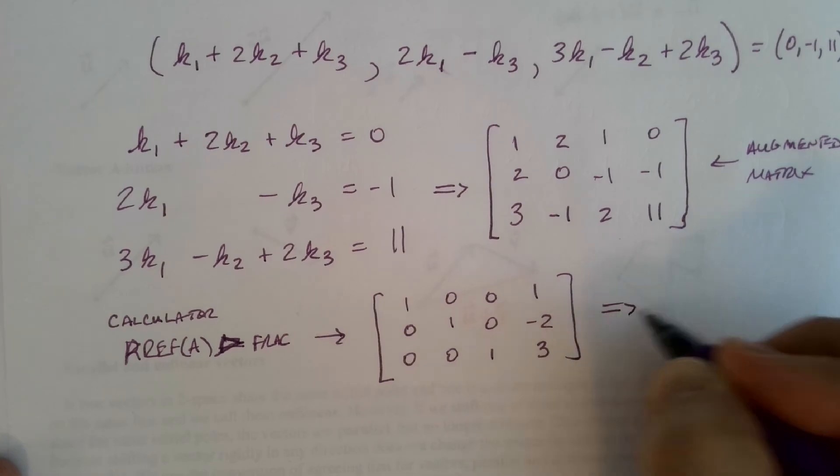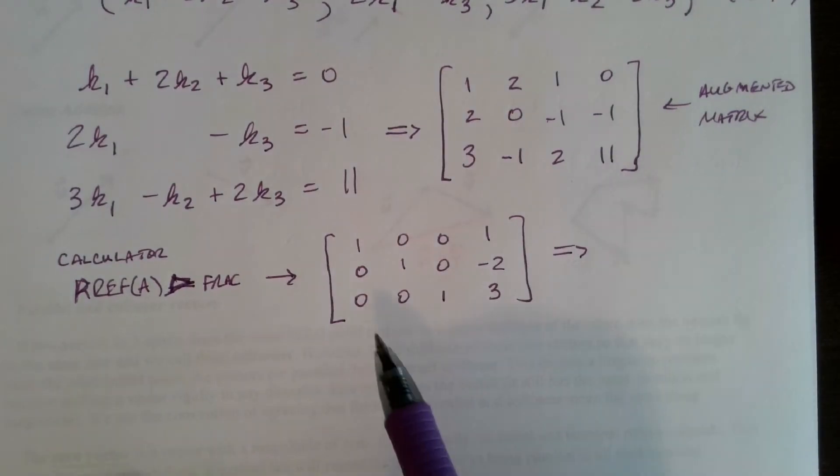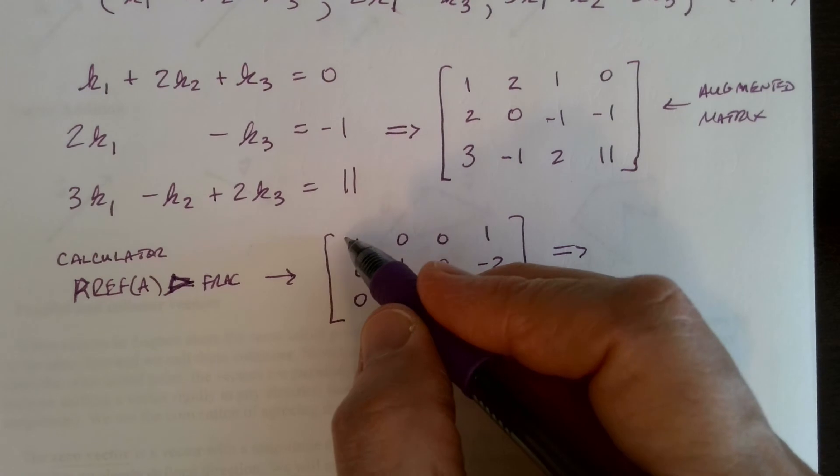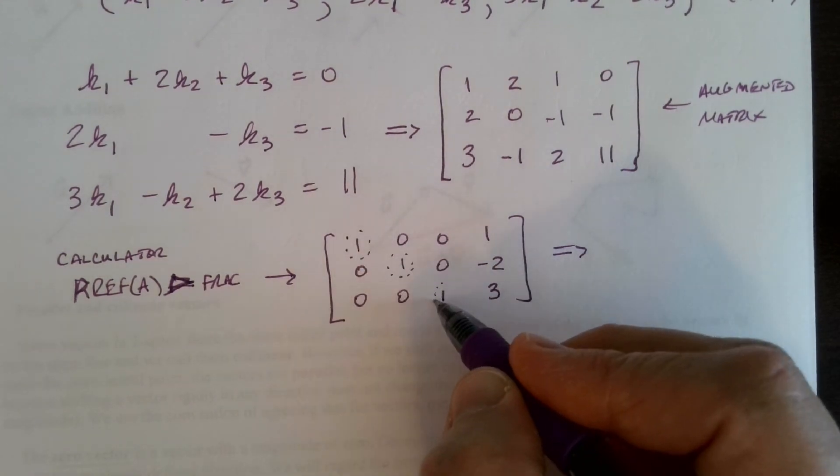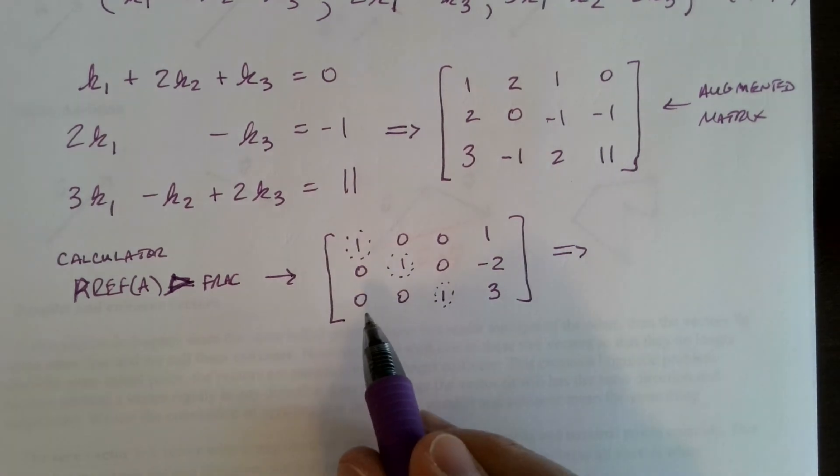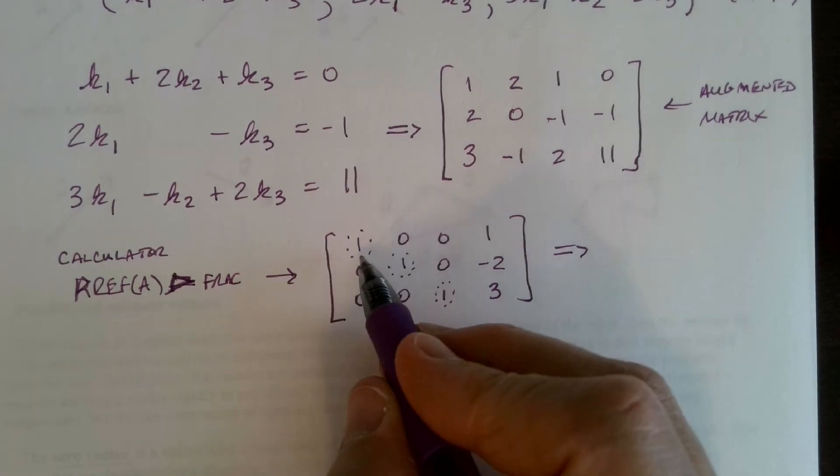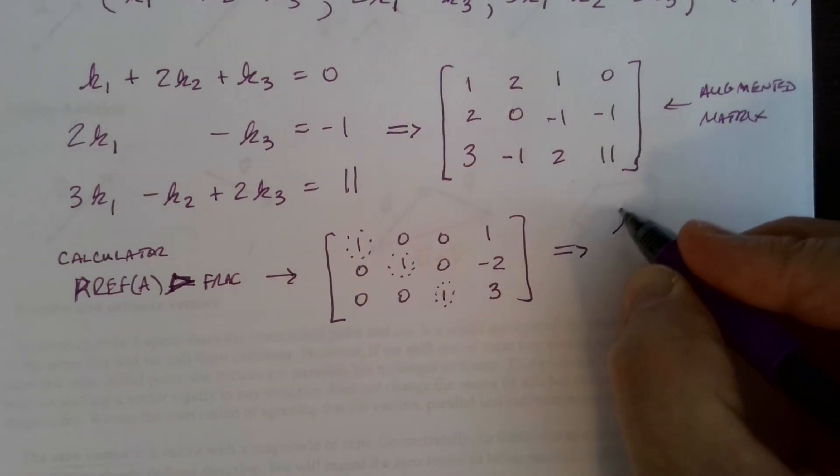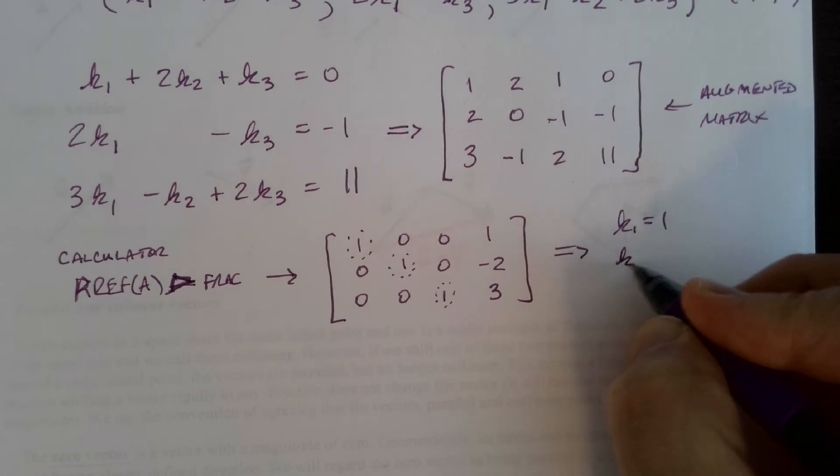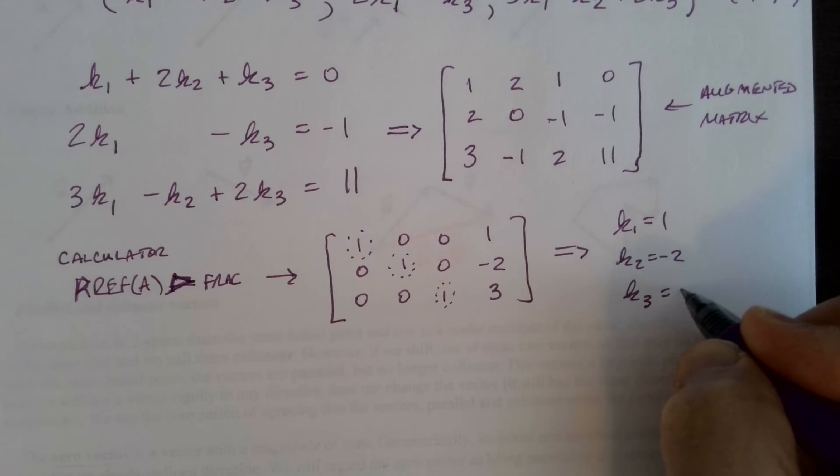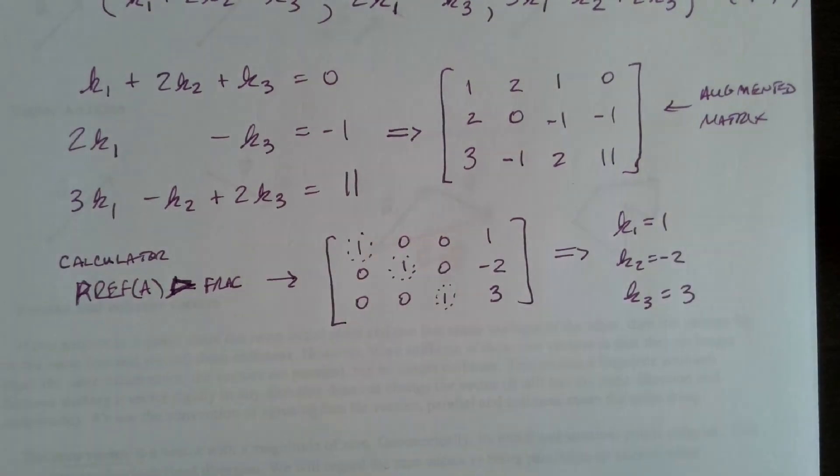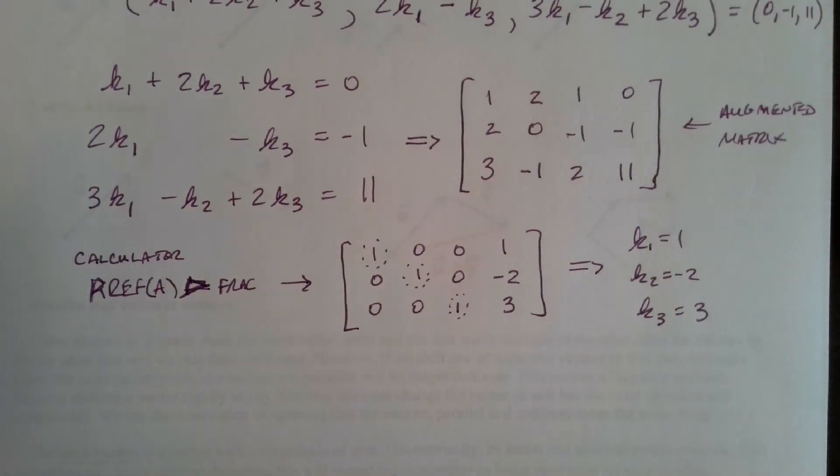Which, of course, tells me that I have exactly one solution. Notice there's a leading 1 in the location of every variable, K1, K2, and K3. So K1 equals 1, K2 equals negative 2, K3 equals 3. Okay, so we have exactly one solution.